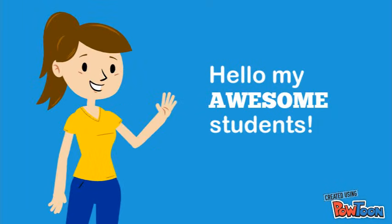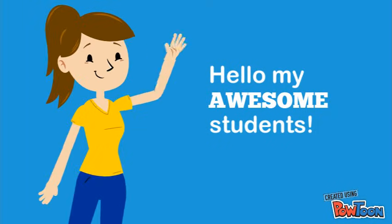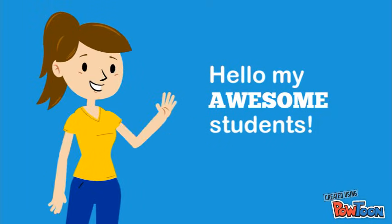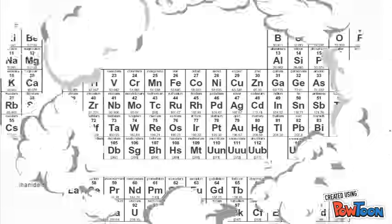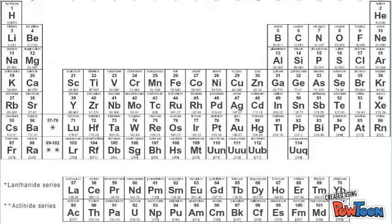Hi everyone! Today we're going to be talking about trends in the periodic table. As you can see, the periodic table is organized by placing the elements in order of increasing atomic number. The shape of the table places atoms with similar properties in the same column.